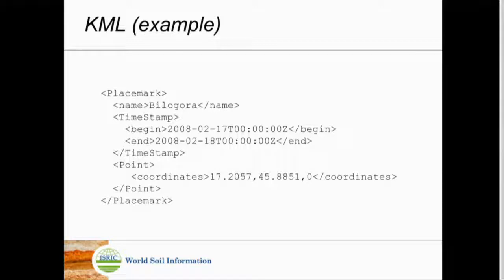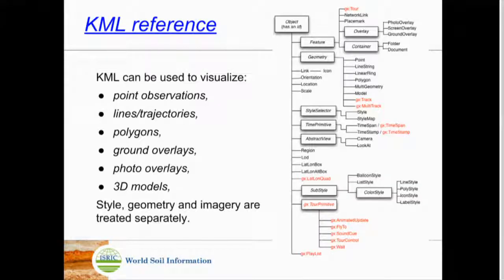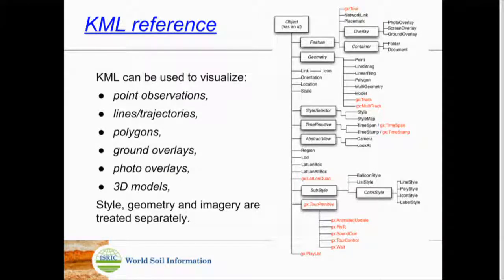When you look at the KML reference there are lots of tag names and fields — many possibilities. There's a whole book about KML. I was surprised at how many things you can do in KML. For example, you can visualize a regression plot in Google Earth — you won't find examples online, but you can make 3D points, put a line through them, and put a frame.